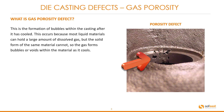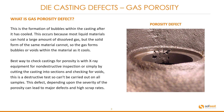We can see here on the right a typical porosity defect on a casting. The best way to check castings for porosity is with x-ray equipment for non-destructive inspection, or simply by cutting the casting into sections and checking for voids. This is a destructive test so cannot be carried out on all samples. This defect, depending upon the severity of the porosity, can lead to major defects and high scrap rates.